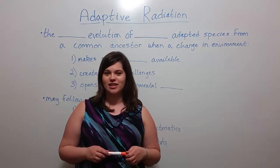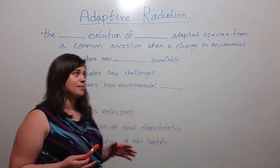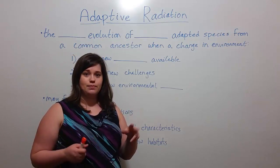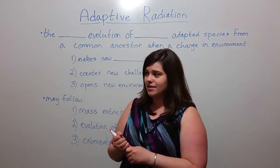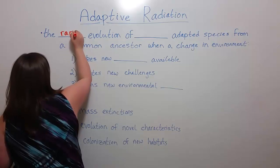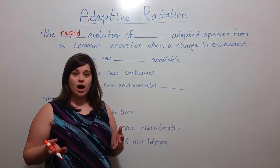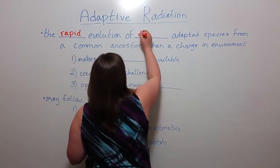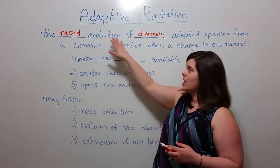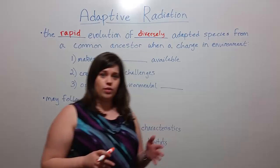Hi everyone, and welcome to Biology Professor. In today's video we're going to be talking about a special type of evolution known as adaptive radiation. Adaptive radiation has two particular things that distinguish it. The first is that it is a type of evolution that happens quite rapidly — a rapid evolution of a lot of diversity. Adaptive radiation is the rapid evolution of diversely adapted species from a common ancestor when at least one of three things is occurring.